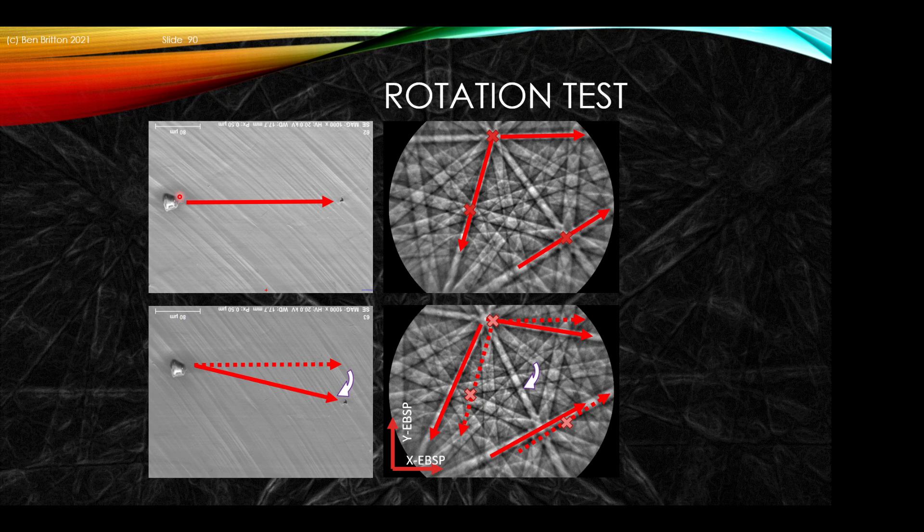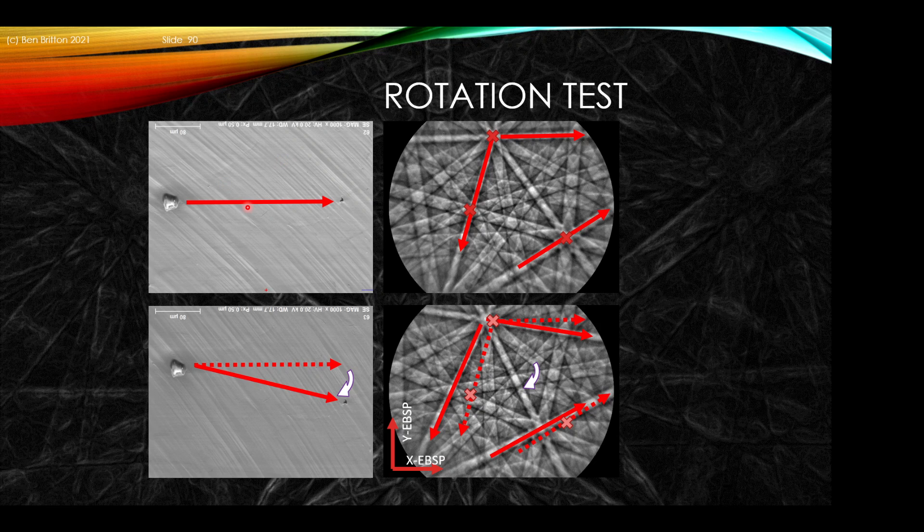If we do this with a deformed nickel single crystal that has slip bands and fiducial markers on the surface, and rotate the sample clockwise, we see that the diffraction pattern rotates clockwise with us. This horizontal band starts to tip downwards, this band moves from near vertical to more horizontal, tipping upwards. We describe the EBSP Gnomonic geometry such that we have Y pointing upwards and X pointing horizontal, and again Z pointing out of the sample.